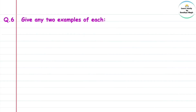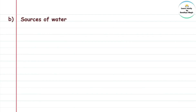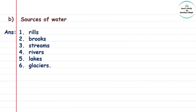Question 6: Give any two examples of each weather-related event. Answer: Forming of clouds, rainfall, fog, winds, storms. B: Sources of water — rivers, lakes, glaciers, brooks, streams.